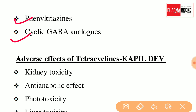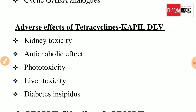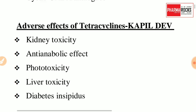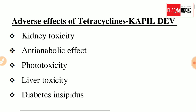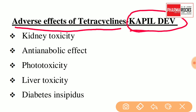The next trick is regarding the adverse effects of Tetracyclines. The short form for adverse reactions of Tetracyclines is 'Kapil Dev'. K stands for Kidney Toxicity, A stands for Anti-Anabolic Effect, P stands for Phototoxicity, I stands for... L stands for Liver Toxicity, D stands for Diabetes Insipidus. So 'Kapil Dev' helps you remember Tetracycline side effects.